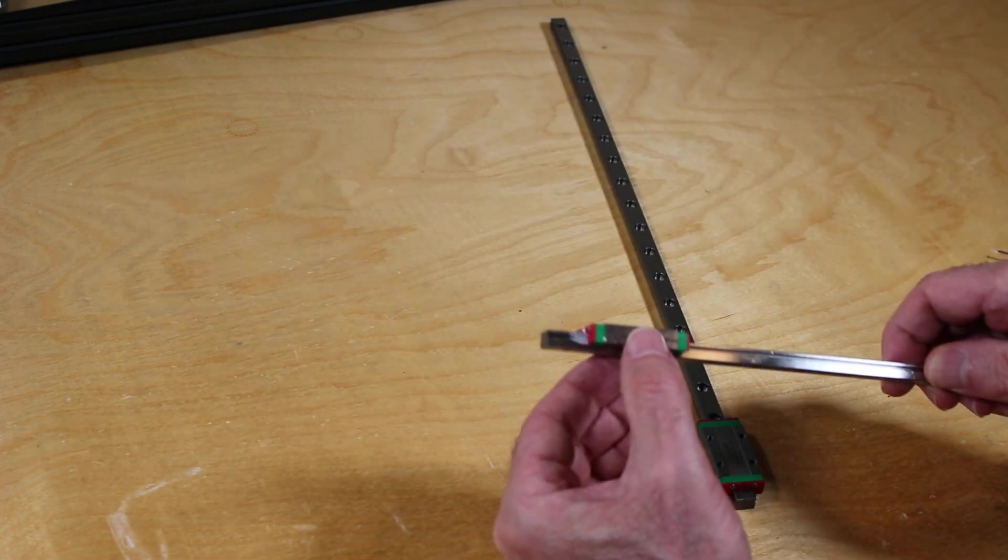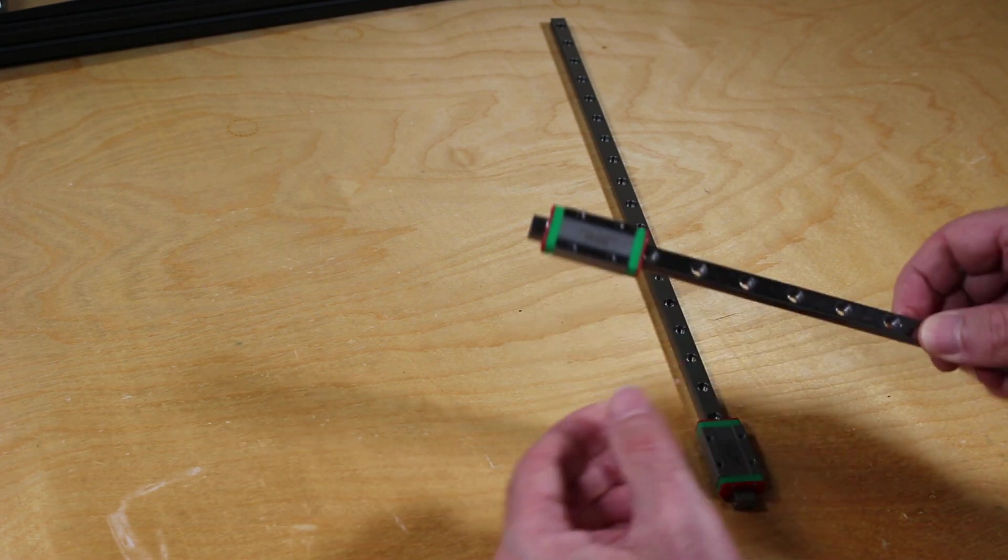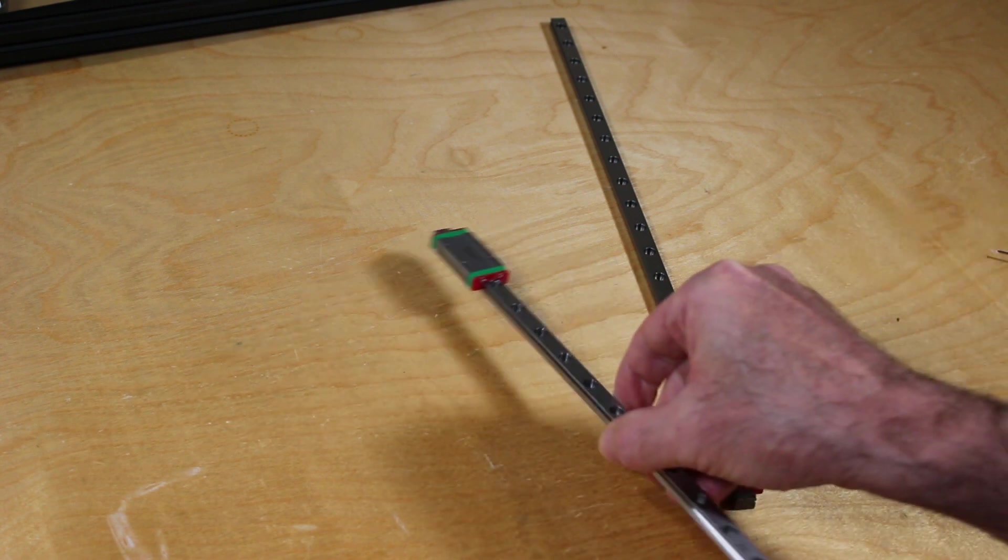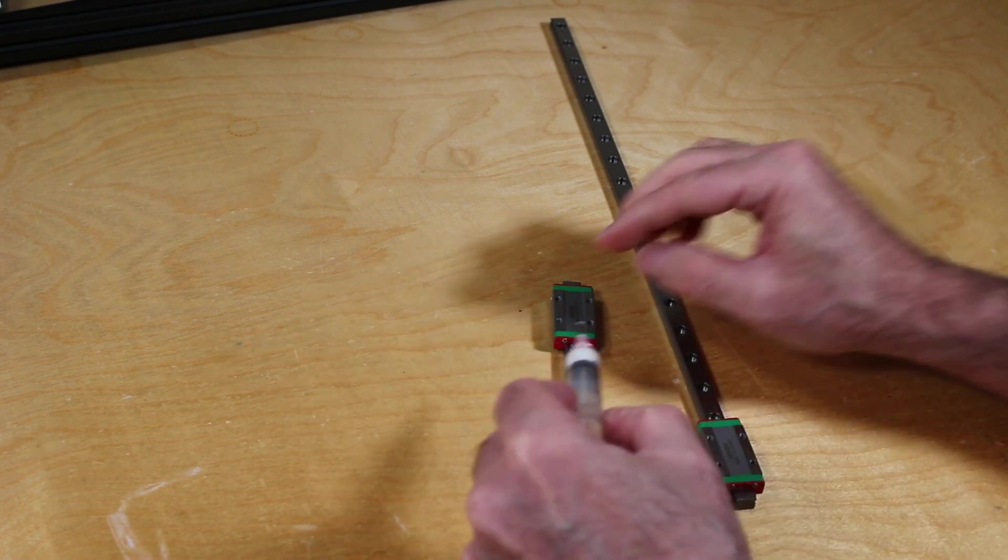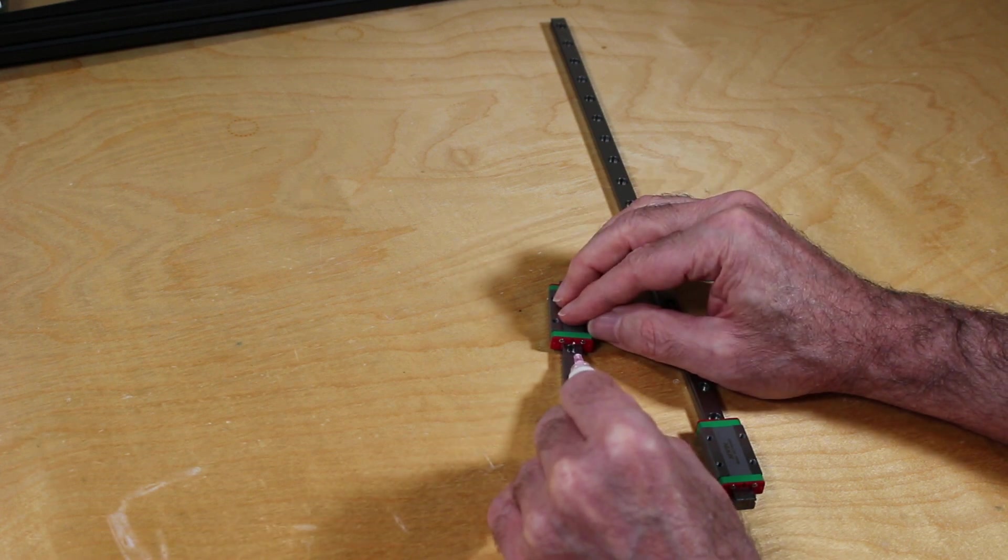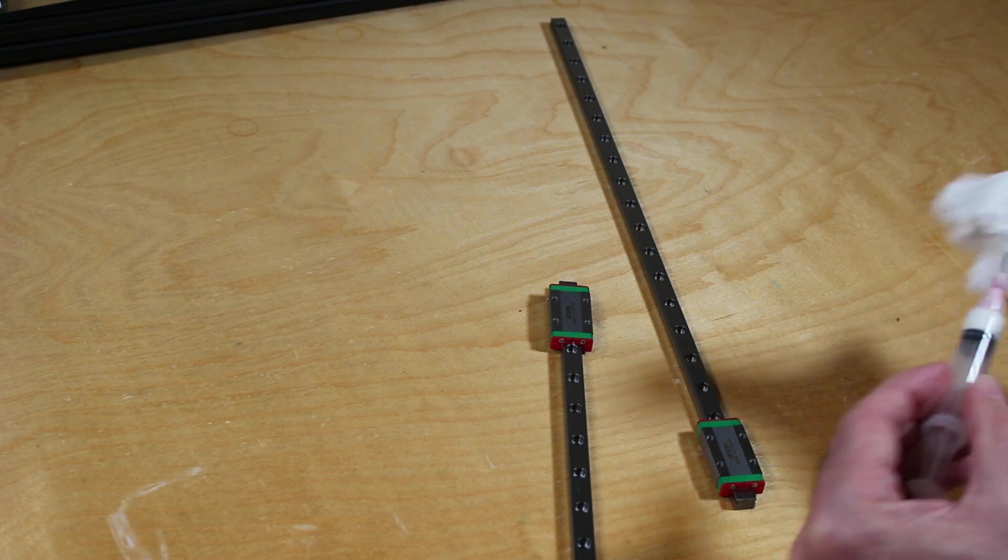Now I'm flipping the guide around, and there you can see some of the grease. White lithium is nice, it's very visible. I'm flipping it around so now I can get the other side of the carriage, and I'm basically going to do the exact same thing.